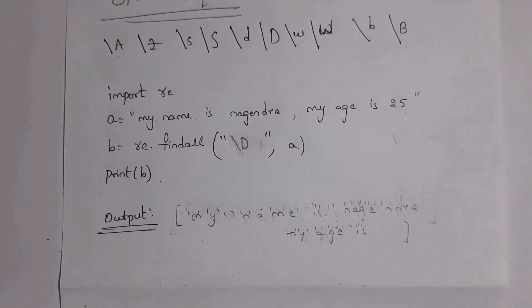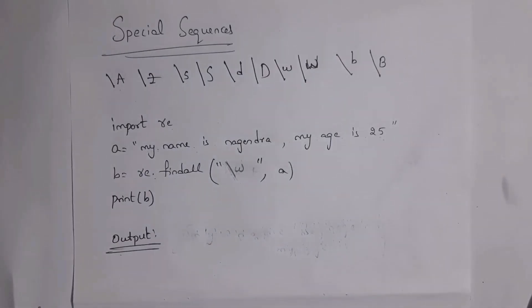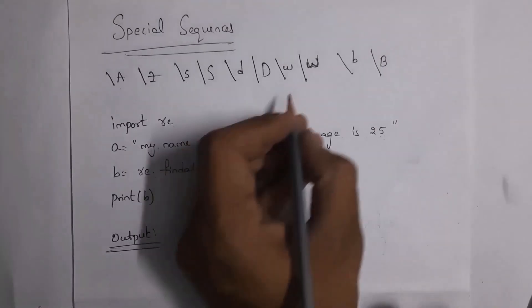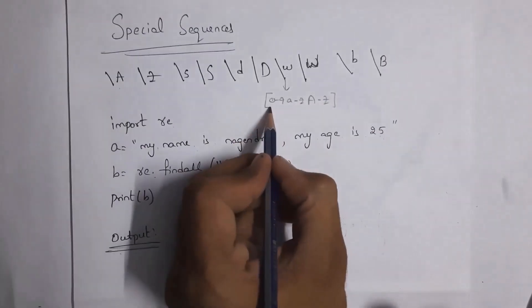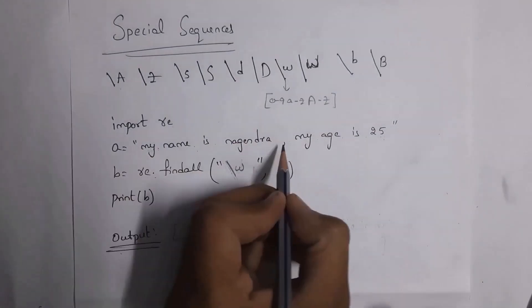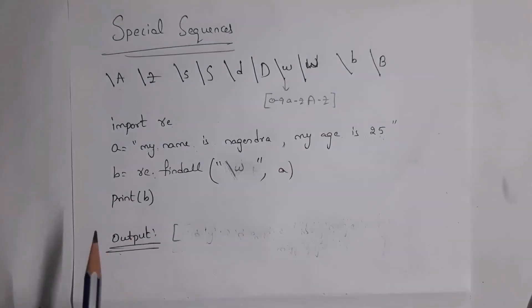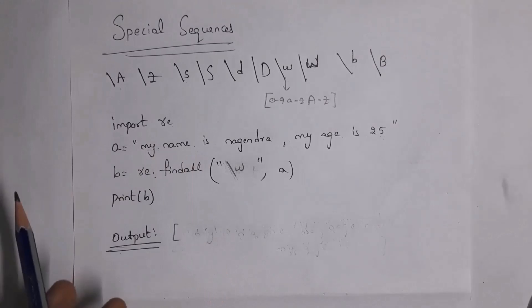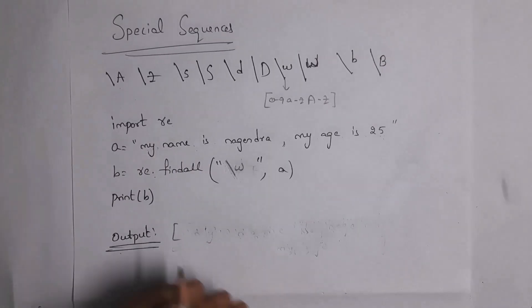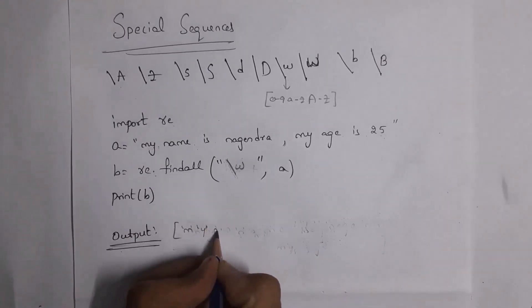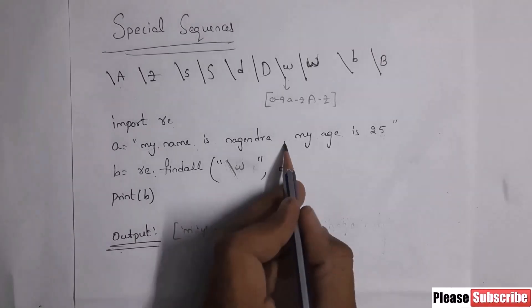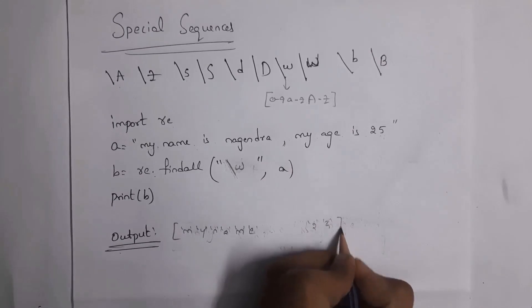Next I'll explain `\w` (backslash small w). `\w` prints characters that contain alphabets from a–z (lowercase and uppercase) and numbers from 0–9. It prints all these characters except spaces and commas. So for 'my name is nagendra, my age is 25', it will print 'm', 'y', 'n', 'a', 'm', 'e', and so on, skipping spaces and commas, all the way through '2' and '5'.